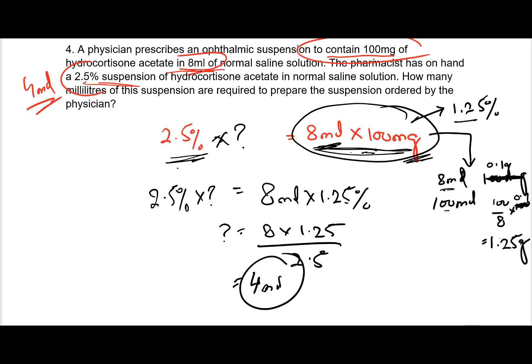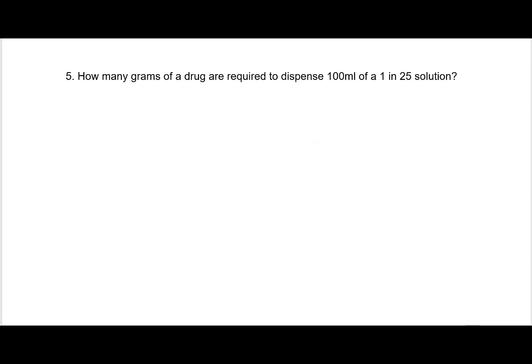To recap: I had to make 100 milligrams in 8 milliliters. I figured out the percentage of the final solution would be 1.25%, and I have to make 8 milliliters of it. With the starting percentage of 2.5%, I applied C1V1 = C2V2 to find the required volume.